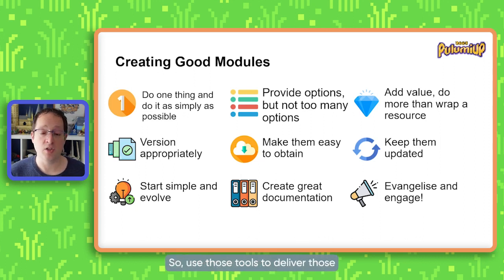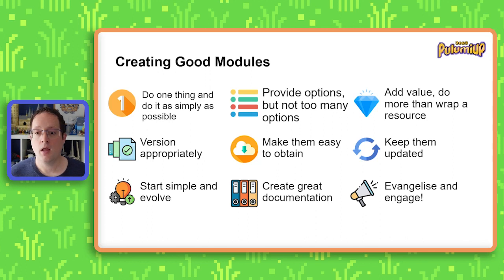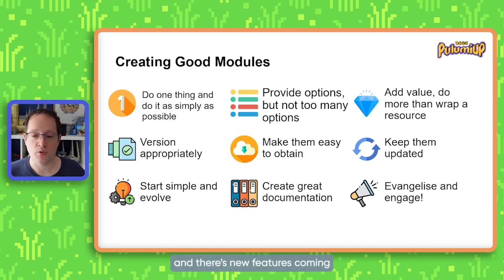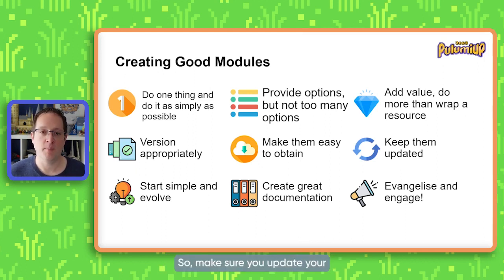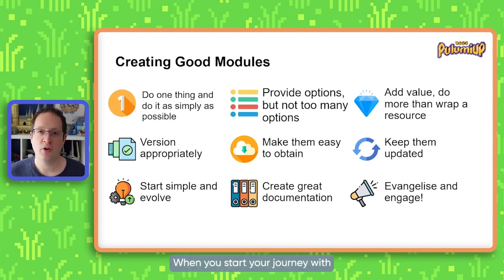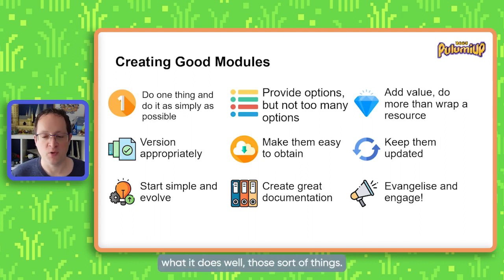Make them easy to obtain — use those tools to deliver modules to the end user so they can easily grab them and update them in the future. Adding any friction between getting and using the modules means people won't use them. On the same note, keep them updated. If you don't update your modules when new features come out for a resource, people can't use your module and they'll just bypass it and use the native resource the complicated way. When you start your journey with creating modules, start simple — pick something relatively straightforward so you can get it released and get feedback about what could be improved.